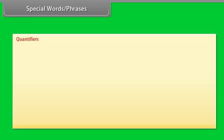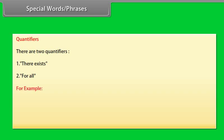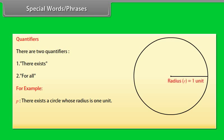Quantifiers: there are two quantifiers — (1) 'There exists' and (2) 'For all.' For example, P: 'There exists a circle whose radius is 1 unit' means that there is at least one circle whose radius is 1 unit.